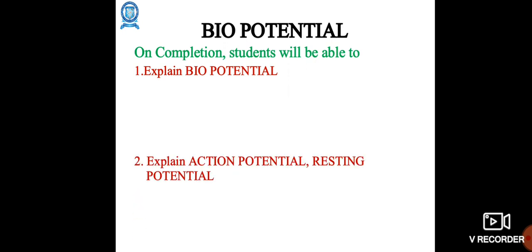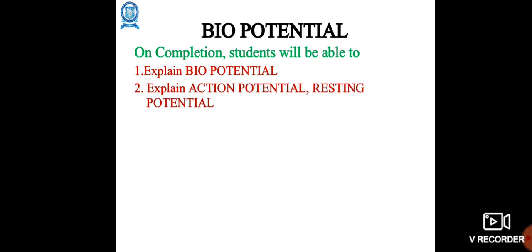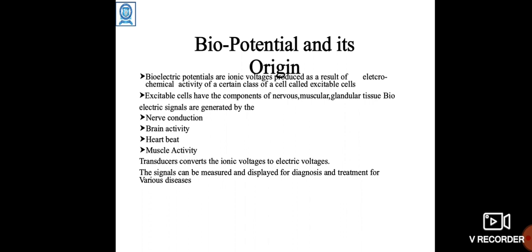explain bio-potential, action potential, and resting potential. Bio-potential and its origin: Ionic voltage is produced as a result of the electrochemical activity of a certain class of cells called excitable cells. Electric signals...